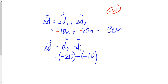Negative 20 subtract negative 10 gives me what? Negative negative gives me a positive, so negative 20 plus 10 gives me negative 10 meters, or 10 meters to the west. We can either say negative 10, or we could say 10 meters to the west.